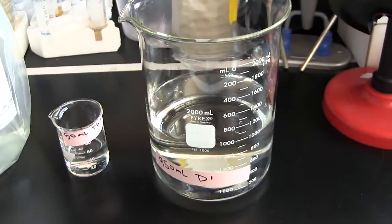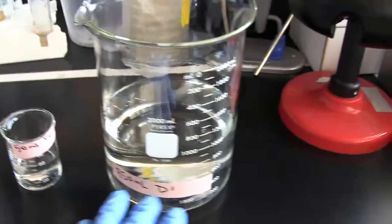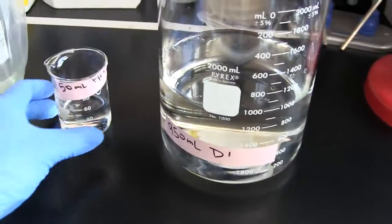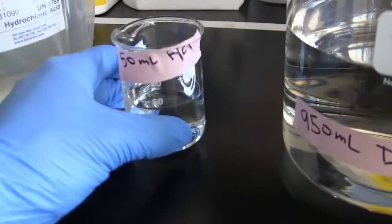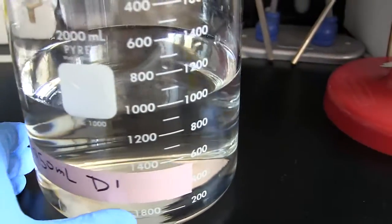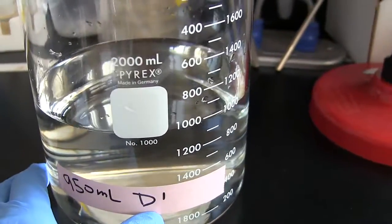So to do that, if we want to make a liter, we need to add 50 mils of hydrochloric acid to 950 mils of DI deionized water.